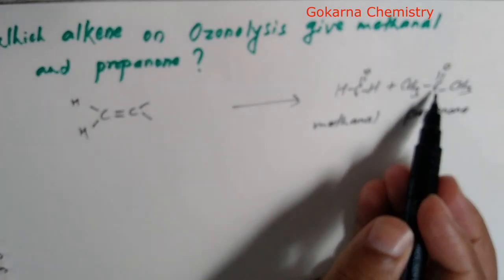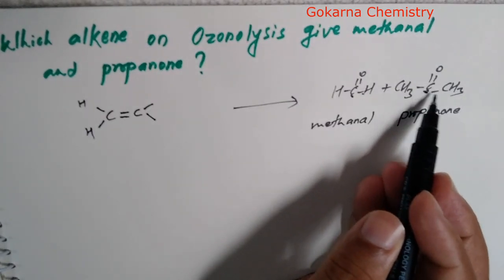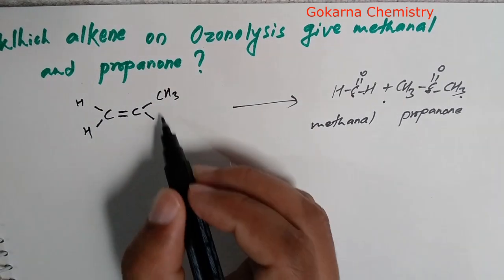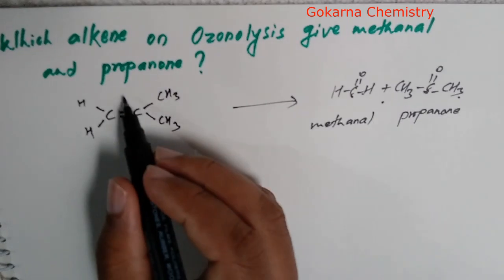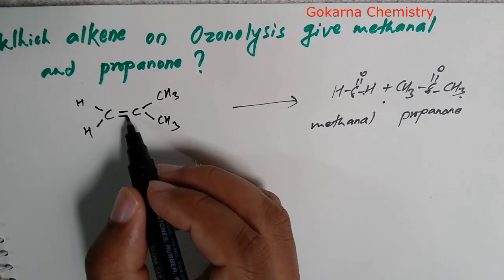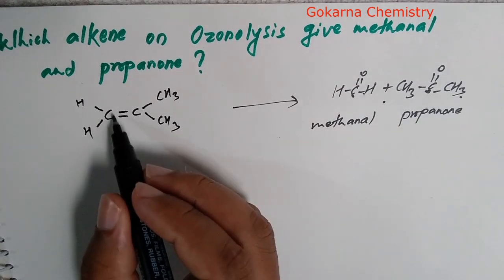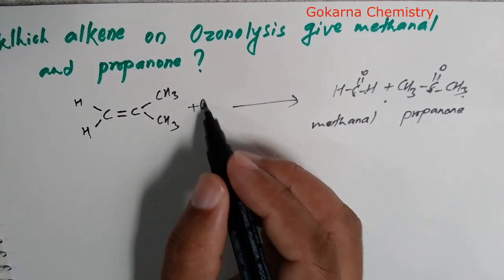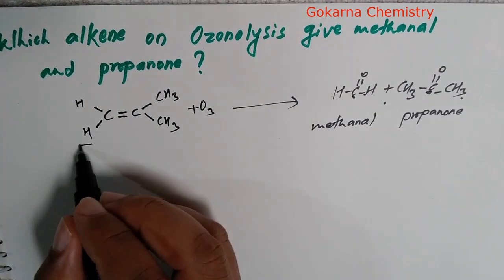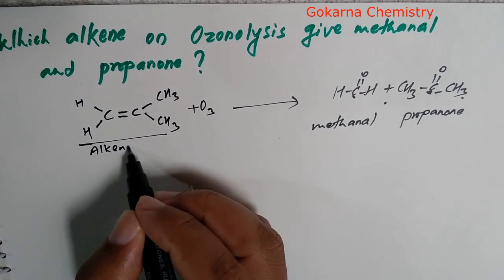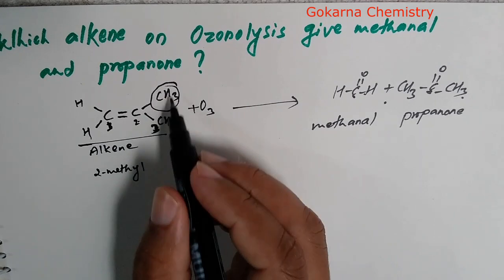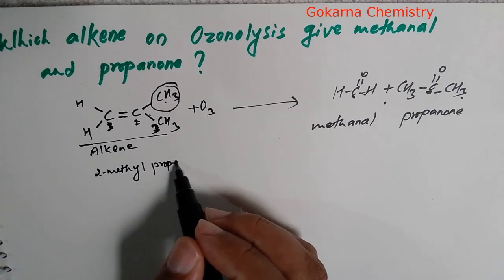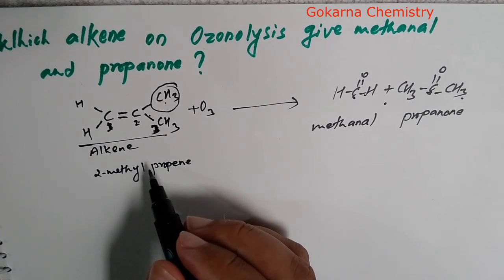The compound is propanone, and then CH3 is on both sides. So in the second part we see CH3 and CH3. Here we can break the oxygen and form acetone. So the alkene is 2-methylpropene.